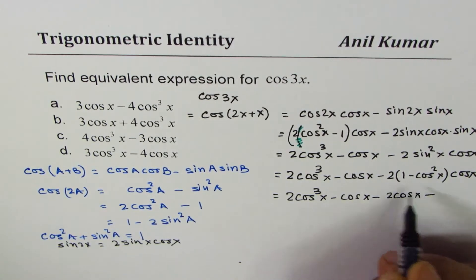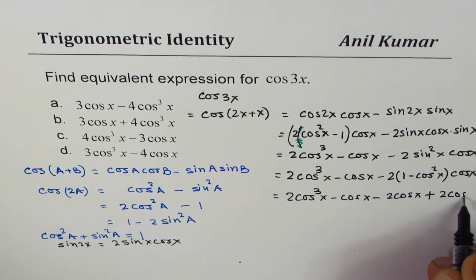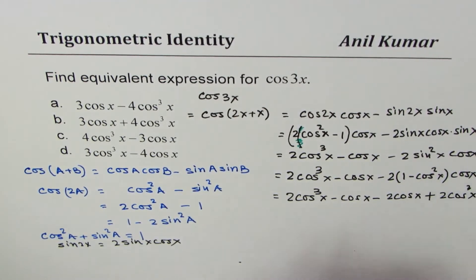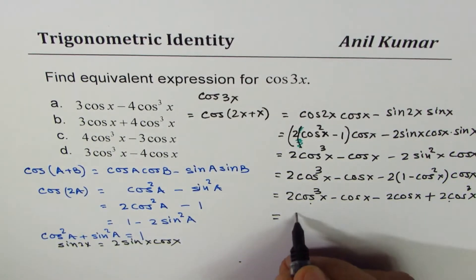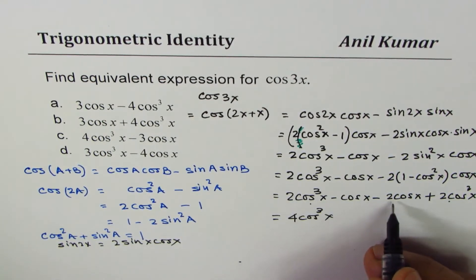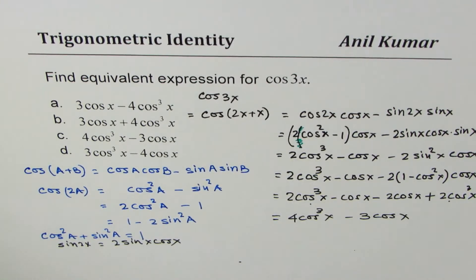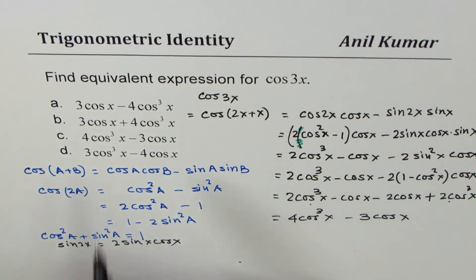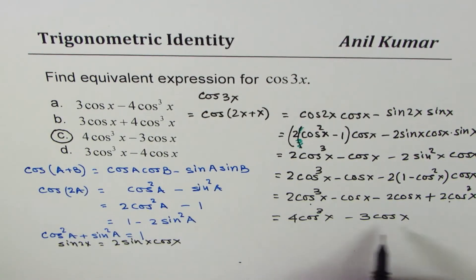The minus minus becomes plus, giving 2 cos³ x + 2 cos³ x = 4 cos³ x, and combining the cos x terms: −cos x − 2 cos x = −3 cos x. So cos 3x = 4 cos³ x − 3 cos x, which is option C.